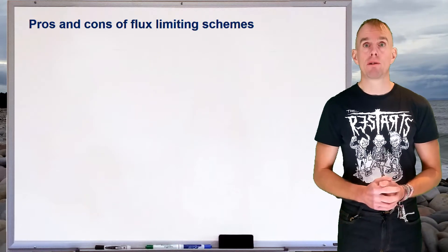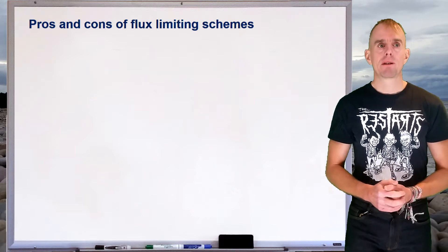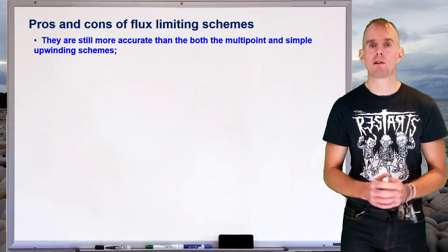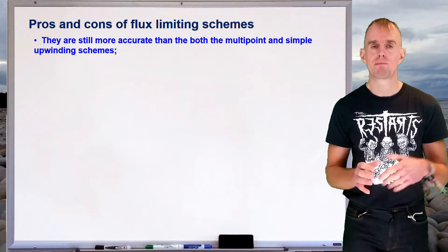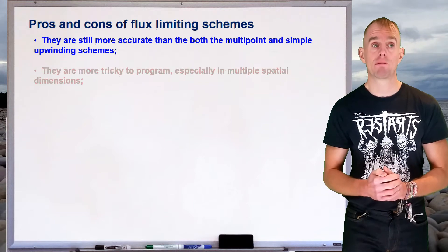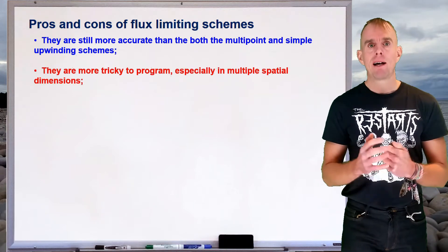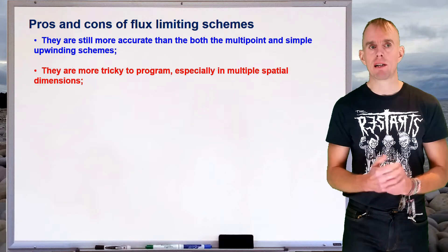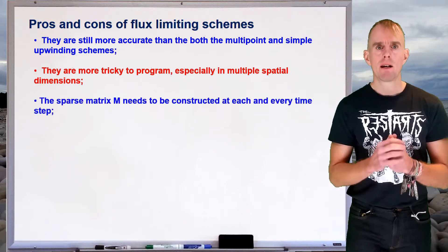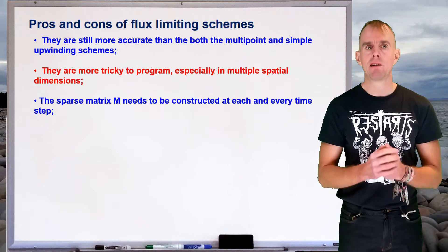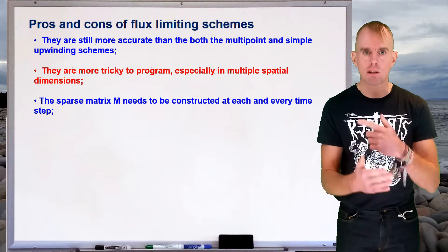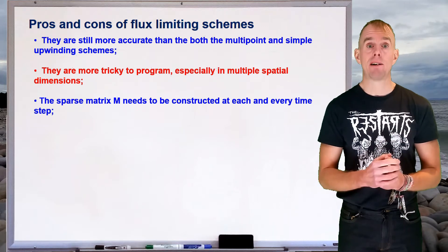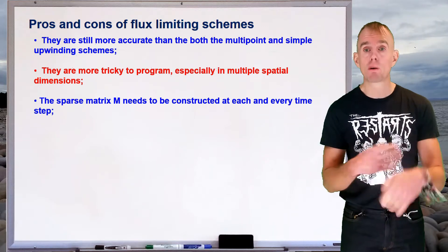Let's recap some pros and cons of flux limiting schemes. Major pro: they are far more accurate than both multipoint schemes and simple upwinding schemes when you have problems with very, very sharp gradients — think shockwaves, think two-phase flows. If you're having to program them, they are more tricky, especially when you have multiple spatial dimensions. The downside is that the sparse matrix M needs to be constructed at each and every time step, which adds an extra matrix construction overhead and slows down the algorithm. It's more computationally intensive.